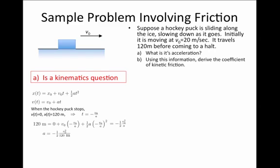We wanted to solve for the acceleration, so we're going to move a to the left-hand side and 120 meters down over to the right-hand side, and we have that the acceleration a is minus one-half v naught squared over 120 meters. If we plug in for v naught squared, that's 20 meters per second quantity squared, and that will equal 400 meters squared over second squared, or that acceleration is minus 1.67 meters per second squared.